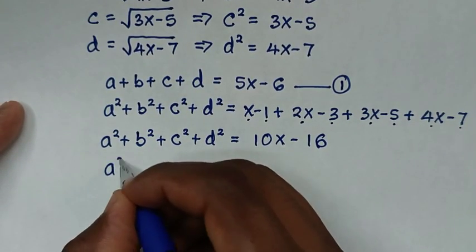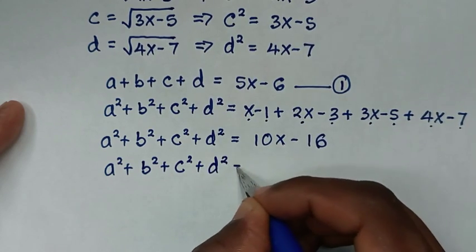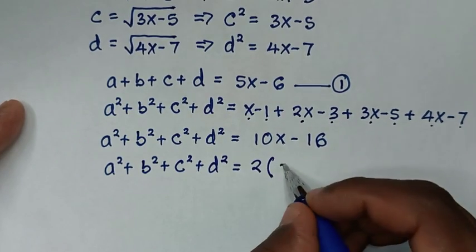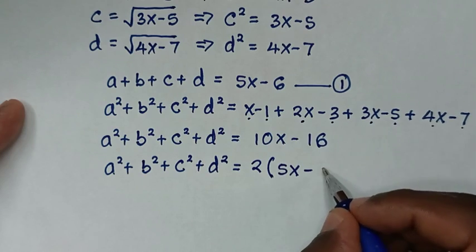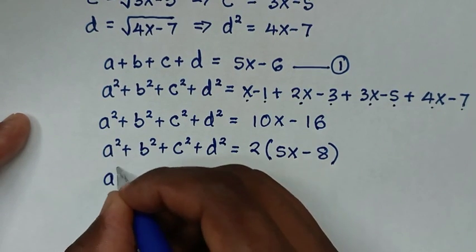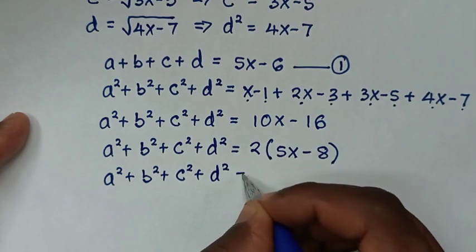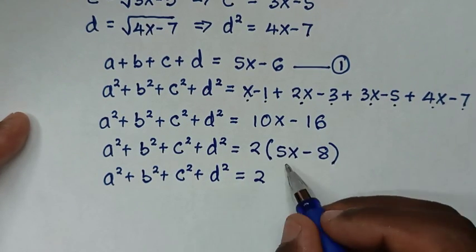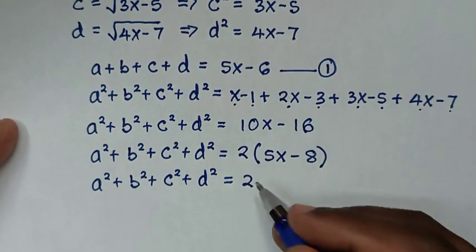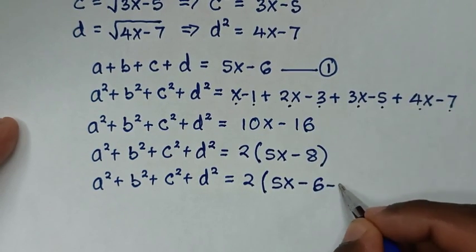We can factor out 2, giving a squared plus b squared plus c squared plus d squared equals 2 times (5x minus 8). To make (5x minus 6) appear, we write (5x minus 8) as (5x minus 6) minus 2, so the expression becomes 2 times [(5x minus 6) minus 2].